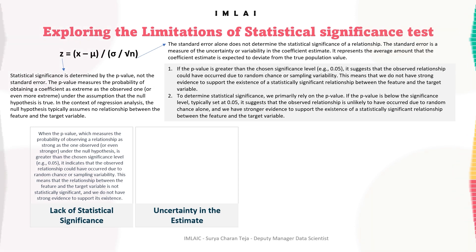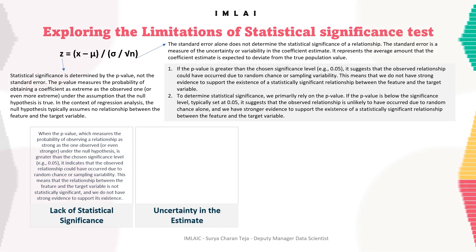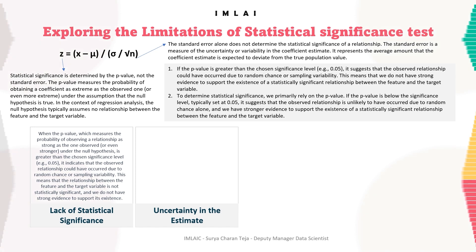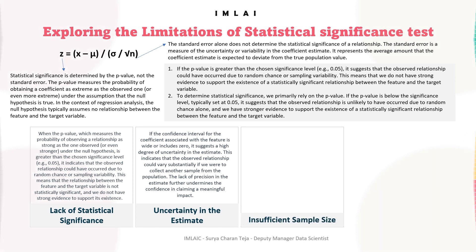The second limitation is uncertainty in the estimate. If the confidence interval for the coefficient associated with the feature is wide or includes zero, it suggests a high degree of uncertainty. This indicates that the observed relationship could vary substantially if we were to collect another sample from the population, undermining confidence in claiming a meaningful impact.